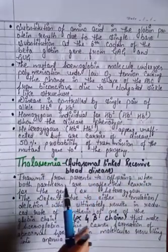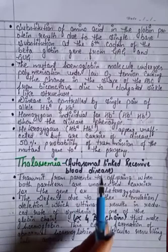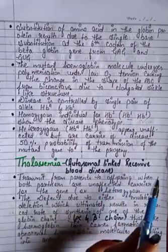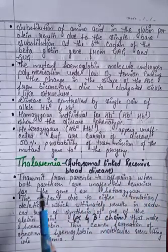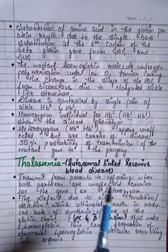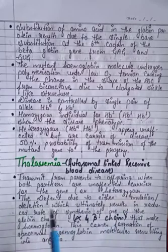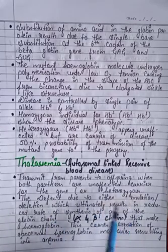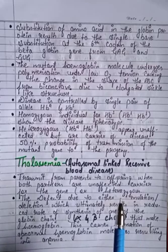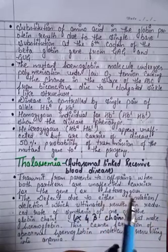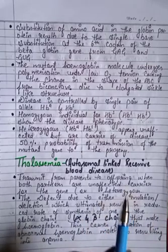Now, thalassemia. It is an autosomal recessive blood disease transmitted from parents to offspring when both parents are unaffected carriers of the gene.